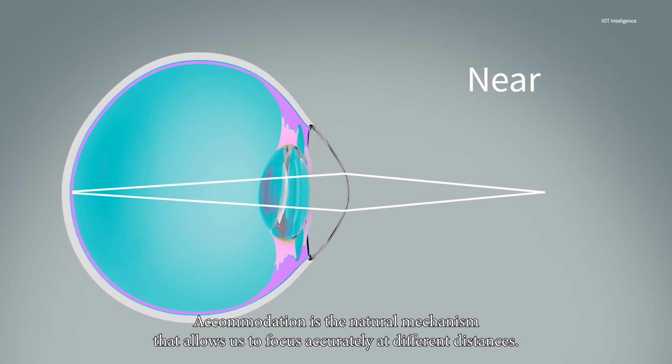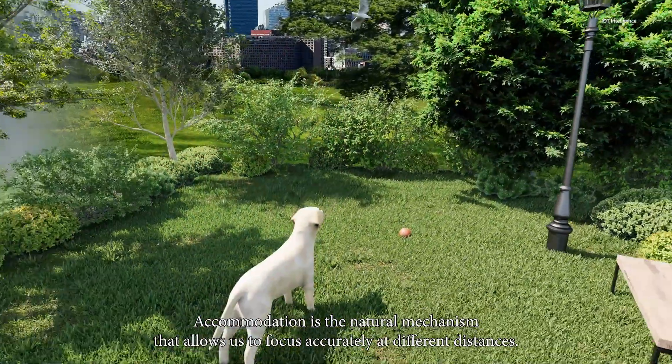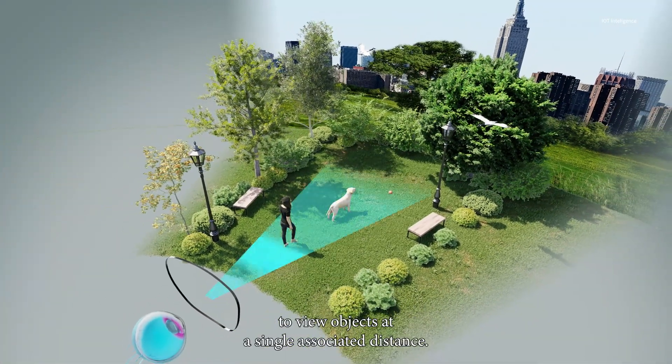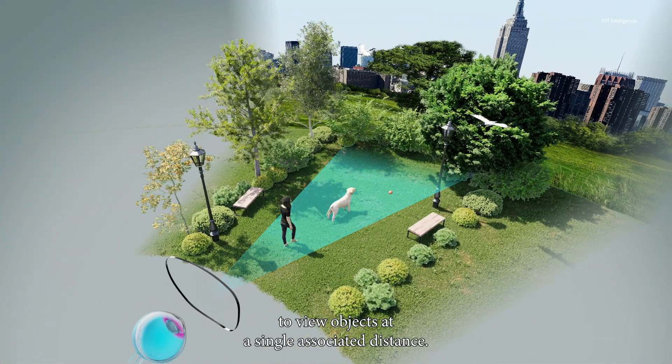Accommodation is the natural mechanism that allows us to focus accurately at different distances. Up until now, custom lenses were only optimized to view objects at a single associated distance.